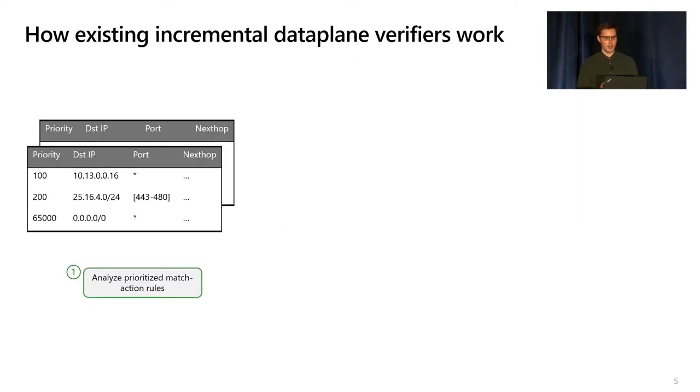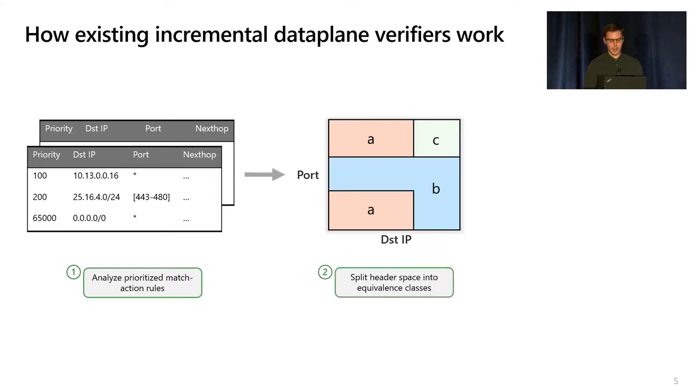Essentially, all data plane verifiers today verify network forwarding behavior in three steps. Number one, they analyze a set of prioritized match action rules for each device in the network—these could be IP forwarding rules, access control list rules, or more. Second, they partition the high dimensional geometric space formed by packet fields into sets of equivalence classes. These are large sets of packets that have the same end-to-end forwarding behavior.